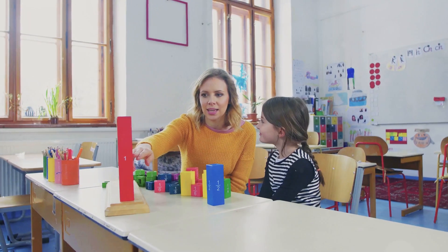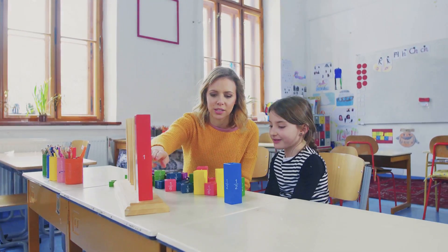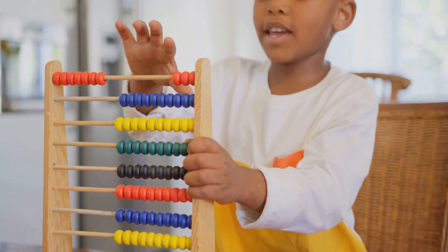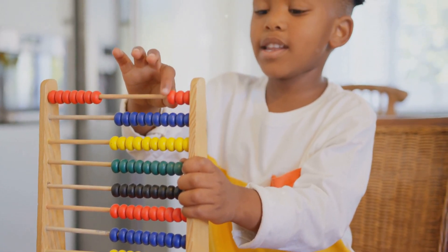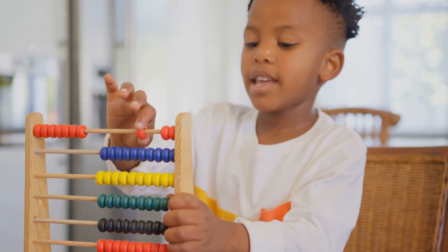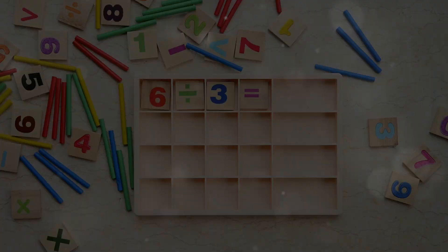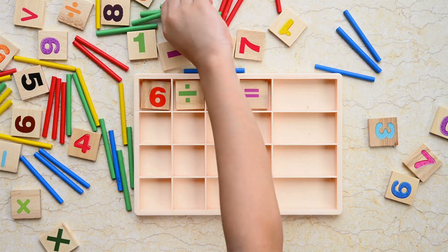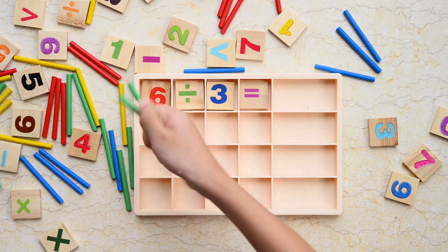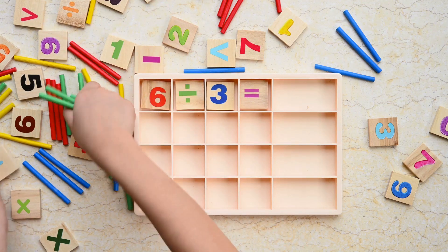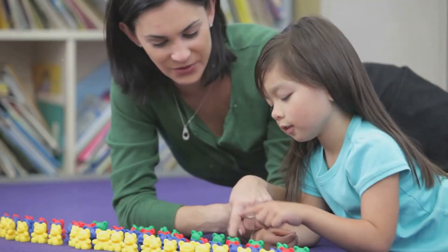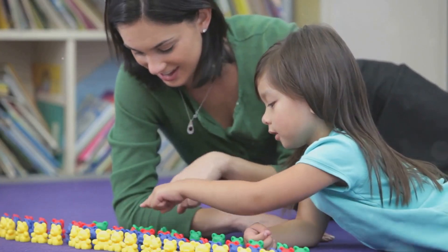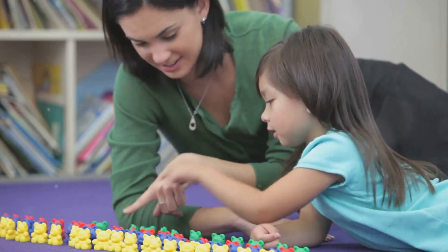For example, let's say we're teaching addition. Instead of just showing students the equation 2 plus 3 equals 5 on a whiteboard, we can use counters, blocks, or even colorful beads to represent the numbers. Have the student gather two counters, then three more, and finally count all the counters together to see that they have a total of five. This hands-on approach allows them to physically experience the process of addition, making it much easier to understand and remember.